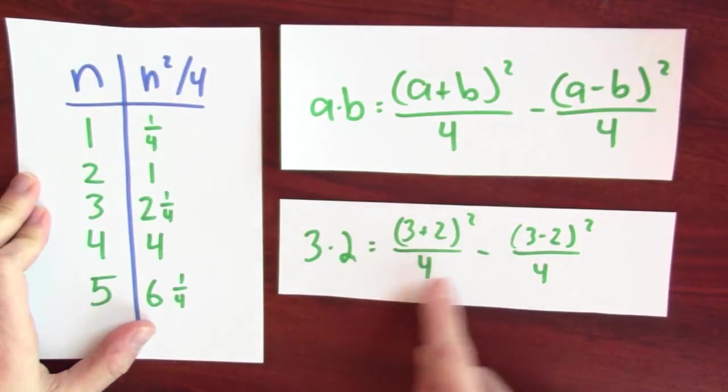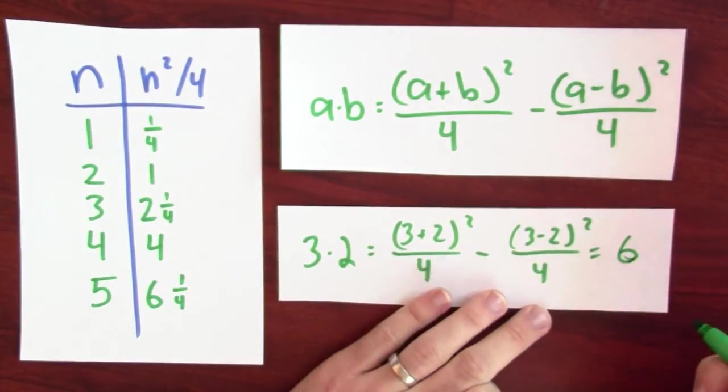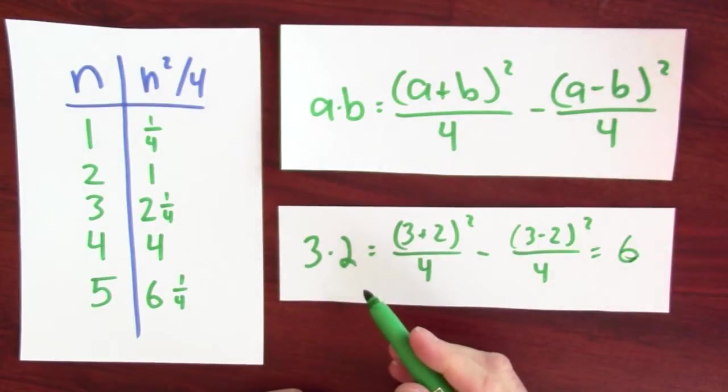And 6 and a quarter minus a quarter is 6, which is a product of 3 and 2. Quarter squares convert multiplication into an addition, a subtraction, 2 table lookups, and a final subtraction.